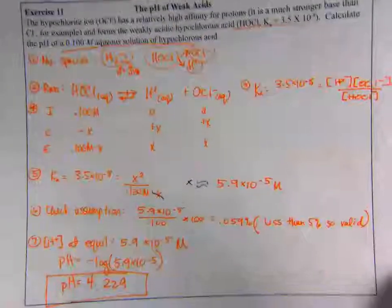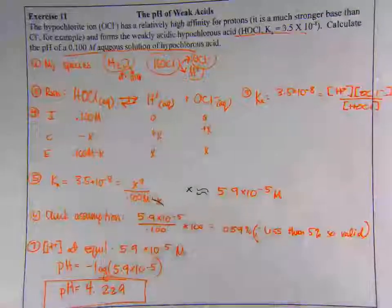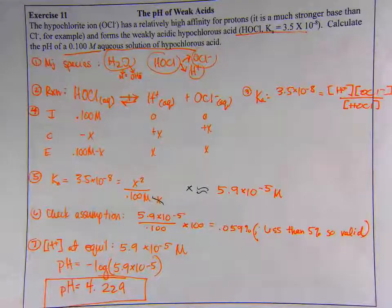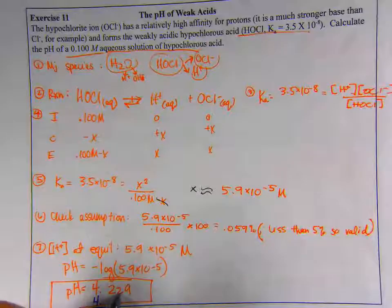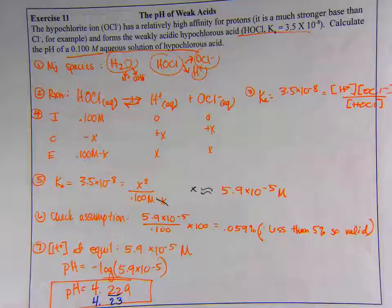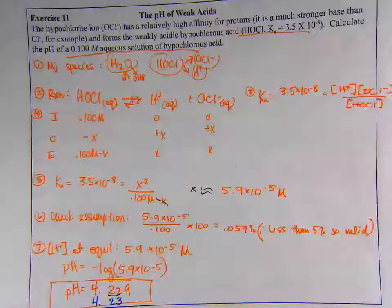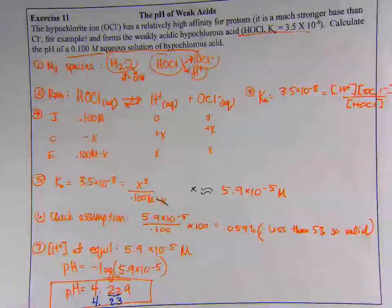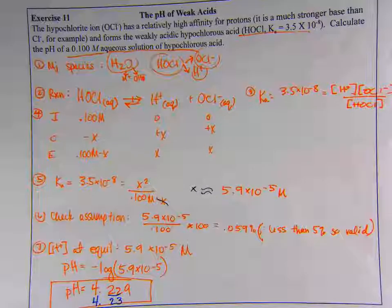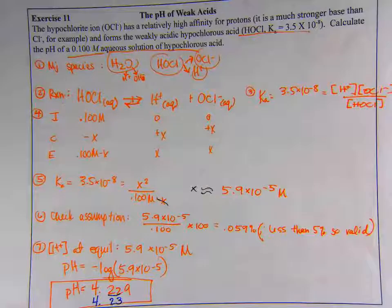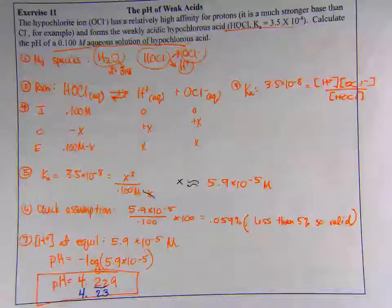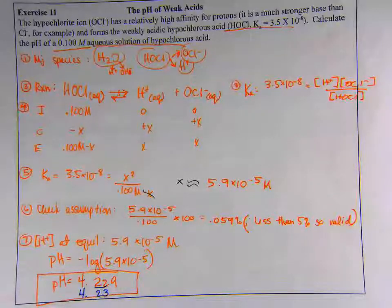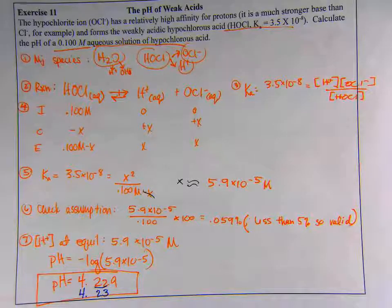Here is the correct answer for exercise 11. We should come up with a pH of 4.229. If I'm looking at sig figs, my Ka is limiting. So I really should round off to two sig figs or 4.23. In this case, our assumption was valid. Make sure that you are understanding the steps and not just copying down the answer without really thinking about what you're doing. It's going to be critical that you know these steps going forward. Exercise 12 is calculating the pH of weak acid mixtures.